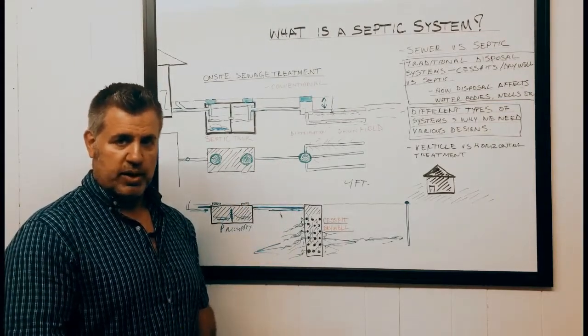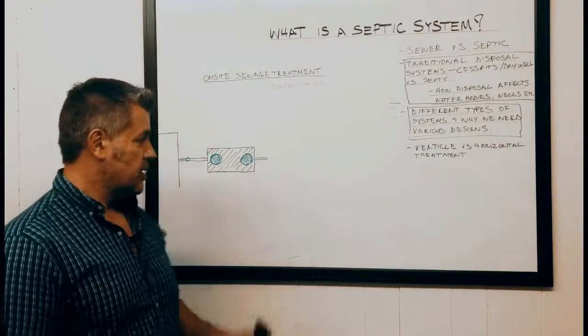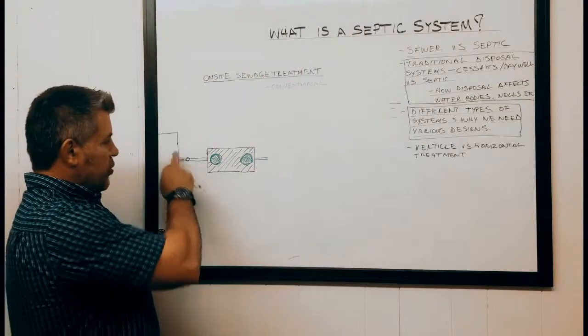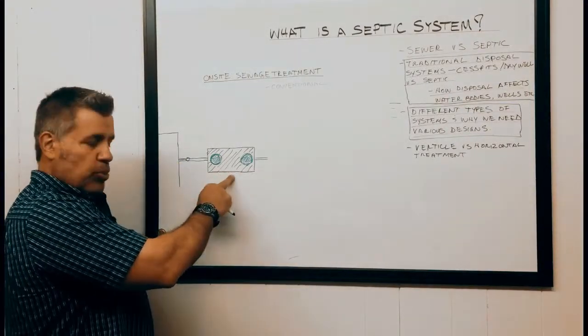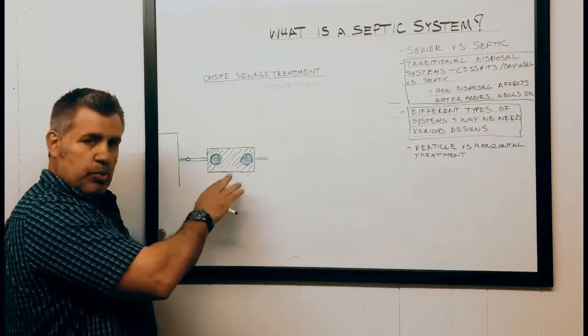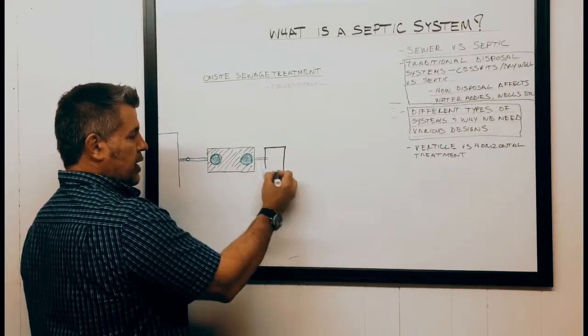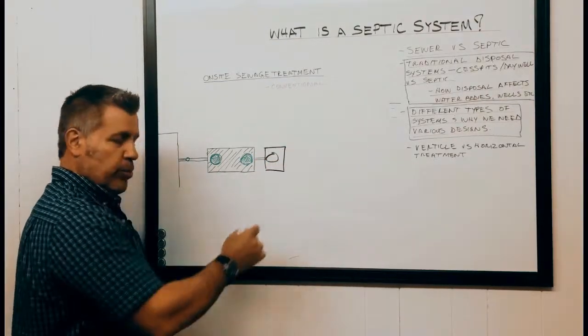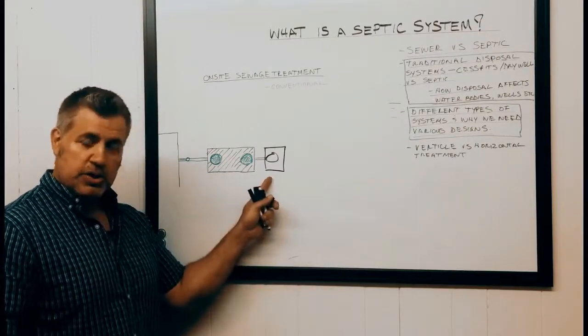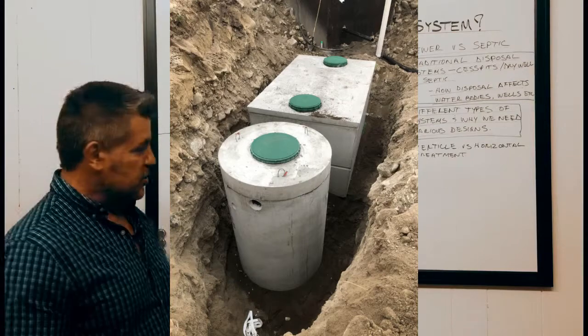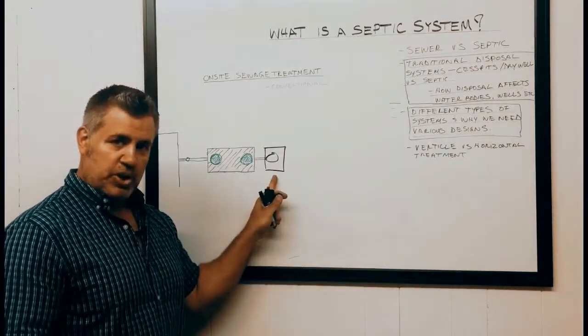The next type of septic system is going to be a pressure system. We've got our sewage making its way from the home into the septic tank which does our primary treatment, and then it goes into a pump chamber, which is where we house a pump that distributes into our drain field.